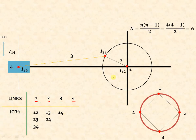Out of the six ICRs, four can be located by observation: 1-2, 2-3, 3-4, and 1-4. In the circle diagram, the ICRs which are already known are joined by solid lines: 1-2, 2-3, 3-4, and 1-4. Now we have to start locating the remaining ICRs.